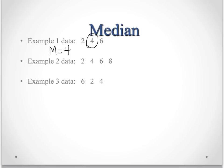Now in our example 2 data, we look and again, it is in ascending order. And now we look for the middle. Where's the middle here? It's right between these two. It's between the 4 and the 6.